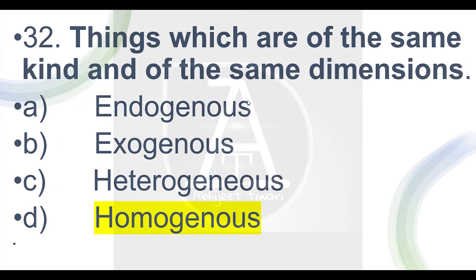Next question: things which are of the same kind, with the same dimension. Option A is 'endogenous' and option B is 'exogenous.' Endogenous and exogenous have many meanings, but simply put: endogenous means something which is dependent, and exogenous means independent — something which does not depend on anything else.